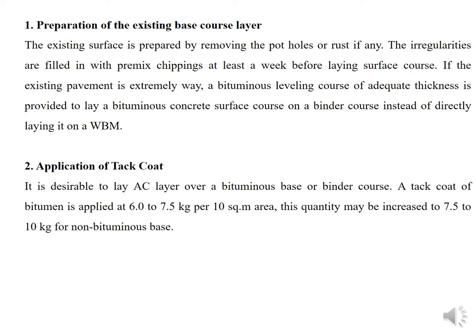The second step is application of tack coat. The tack coat layer is important for binding the first layer, and on top of that you have to apply bituminous material. For the application of tack coat, you have to decide whether it is a bituminous base or non-bituminous base. For a bituminous base, apply 6.5 to 7.5 kg per 10 square meters. For a non-bituminous base, 7.5 to 10 kg of material is required.